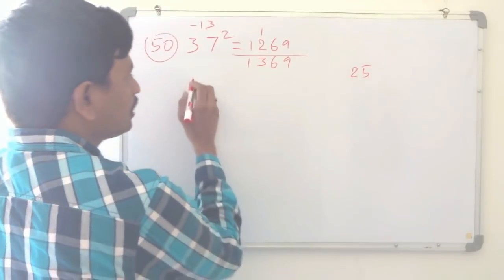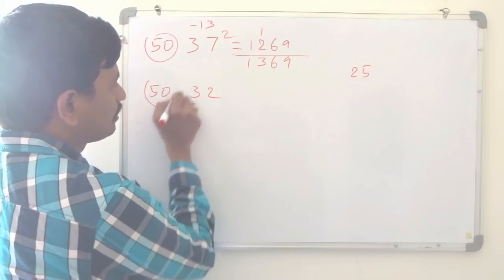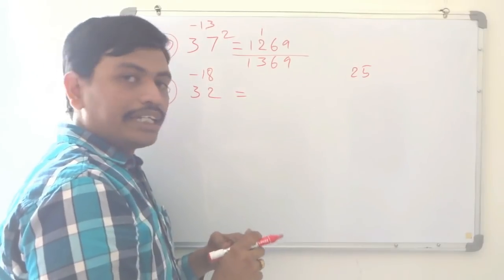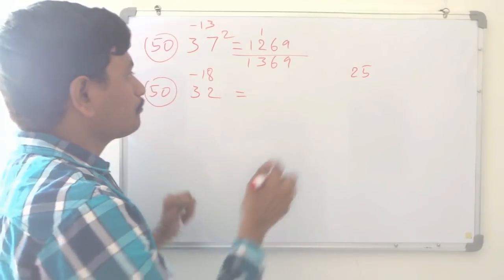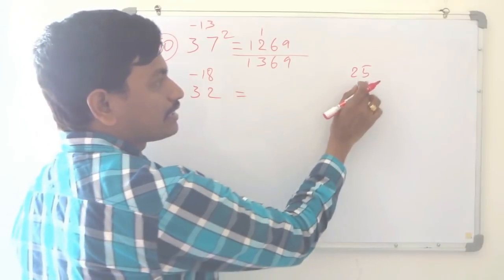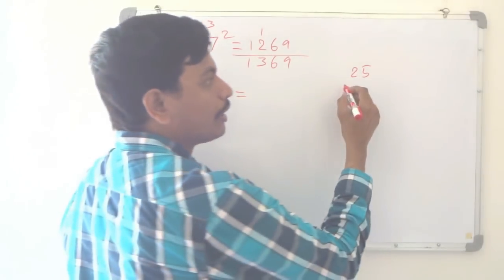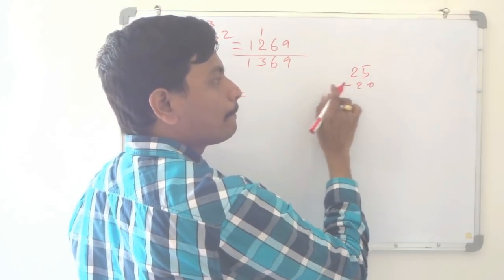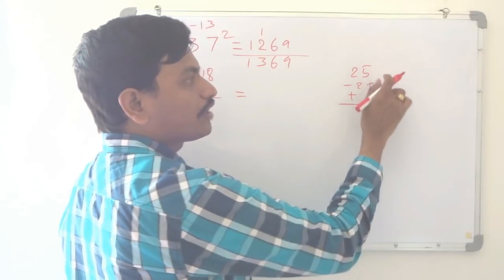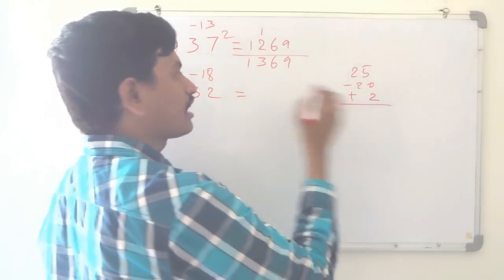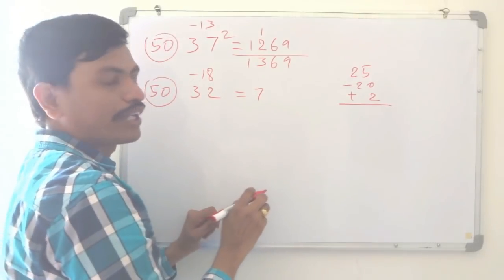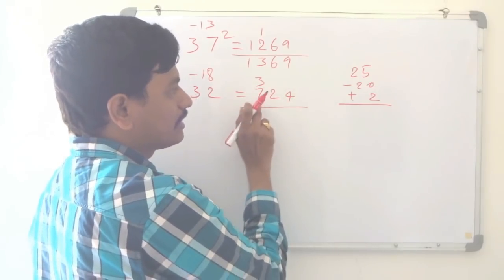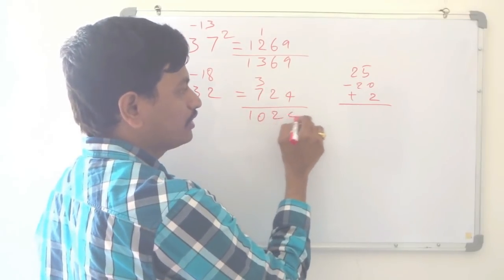I will take another number, 32, which is nearer to 50. 32 is how much less than 50? Minus 18. 18 squared is 324. To subtract 18, I do minus 20 plus 2. So 25 minus 20 is 5, plus 2 is 7. And 18 squared is 324; carry the 3: 7 plus 3 is 10. So 1024 is the square of 32.